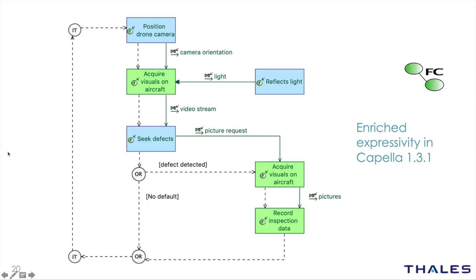Our challenge has been to find balance between giving functional chains more expressivity without making them too complex. What we can do now in version 1.3.1 is similar to what we had in sequence diagrams. We have a loop or iteration that repeats — starting with positioning the drone camera, going to acquire visuals on the aircraft. Between 'position drone camera' and 'acquire visuals on the aircraft', we have a sequence link expressing precedence. And then an OR control node with two branches: either a defect is detected, or no defect is detected and we continue iterating.